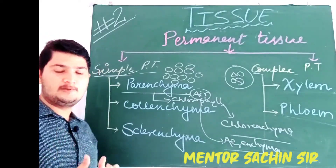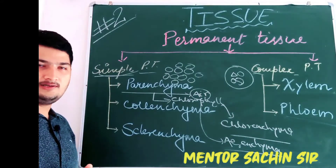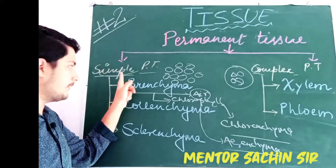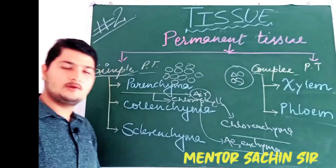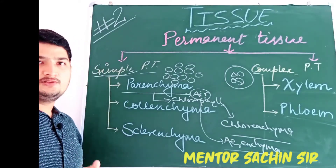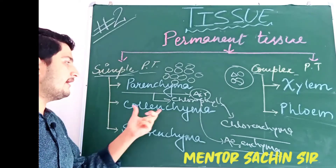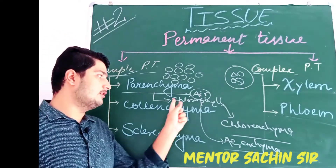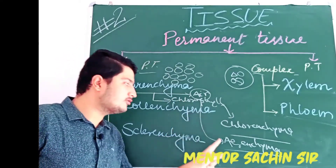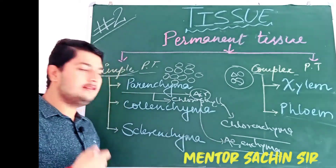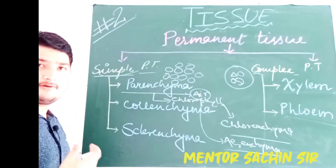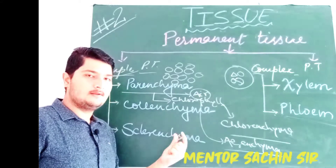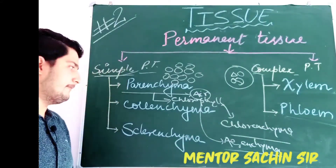In summary, the key points about parenchyma: parenchyma is a type of simple permanent tissue and it is a living tissue. It acts as a storage tissue in the plant body — it basically stores food. In some cases, parenchyma also stores chlorophyll; that parenchyma is said to be chlorenchyma. And in some aquatic weeds or aquatic plants, parenchyma stores air; such parenchyma is said to be aerenchyma.